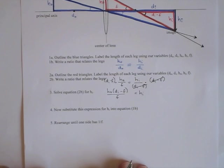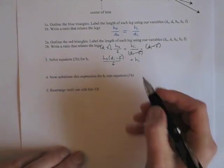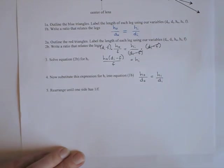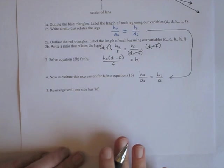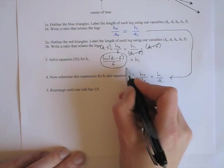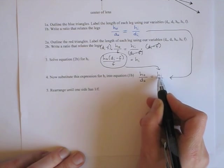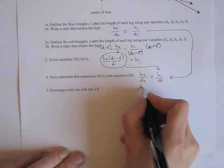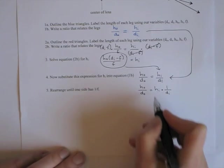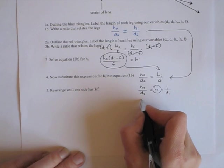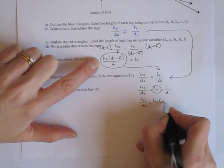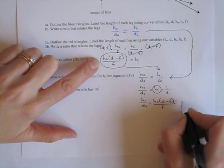Step 4. Now substitute this expression for HI into equation 1B. Let's rewrite equation 1B: HO over DO equals HI over DI. We want to substitute for HI, but the thing we're going to be substituting is kind of a complicated expression. So I'm going to rewrite this first as HI times 1 over DI, so that the algebra will be a little more clear. And now I'm going to substitute for HI this expression. So HO over DO equals HO times DI minus F over F times 1 over DI.